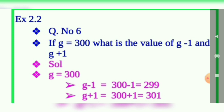Here g value is given, g value is 300. So what is 300 minus 1? 299. What is 300 plus 1? 301. So g minus 1 equals 299, g plus 1 equals 301.